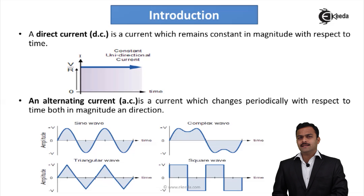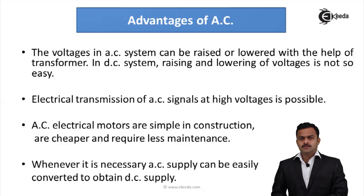Why study AC over DC? There are some important advantages of AC over DC. The first advantage is that voltages in an AC system can be raised or lowered by using a device called a transformer. In one of the upcoming modules we are going to study this device. However, lowering or raising of DC voltage level is not that easy.